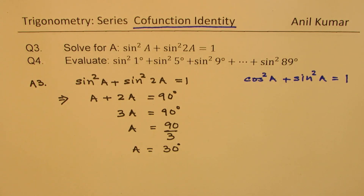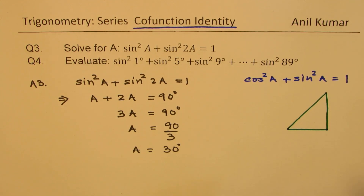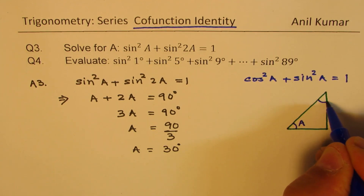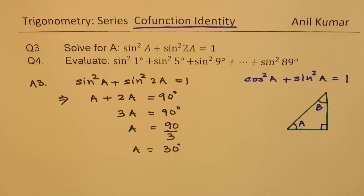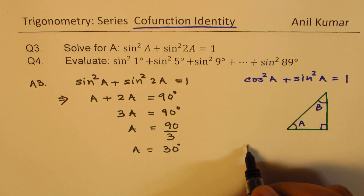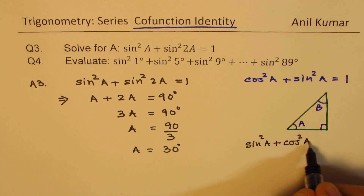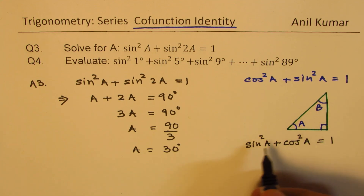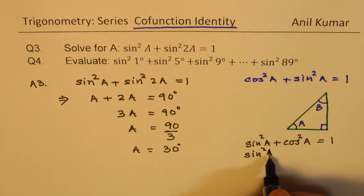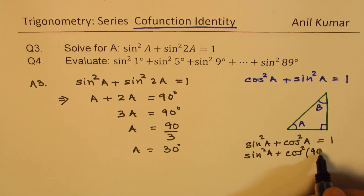Let's get into the details. If I have a right triangle here, with angle a on one side and angle b on the other, in this right angle triangle we can write sine square a plus cos square a equals 1. Now angle a can be written as 90 minus b.